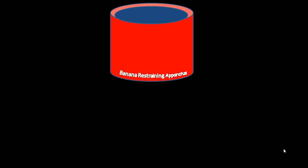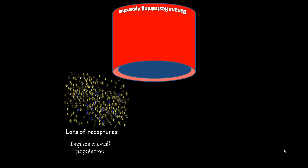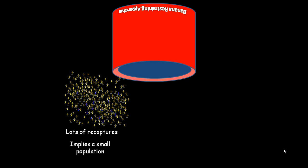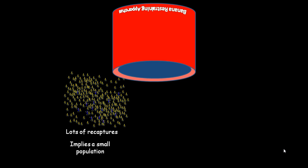So, let's see what we got. If our second sample has a lot of recaptures in it, ones that we sprayed blue, that implies a small population. Because we haven't diluted, as it were, our marked individuals among a whole mass of unmarked individuals.